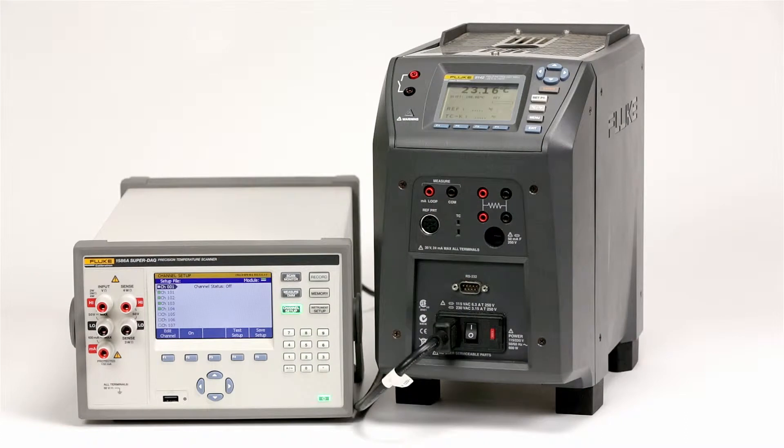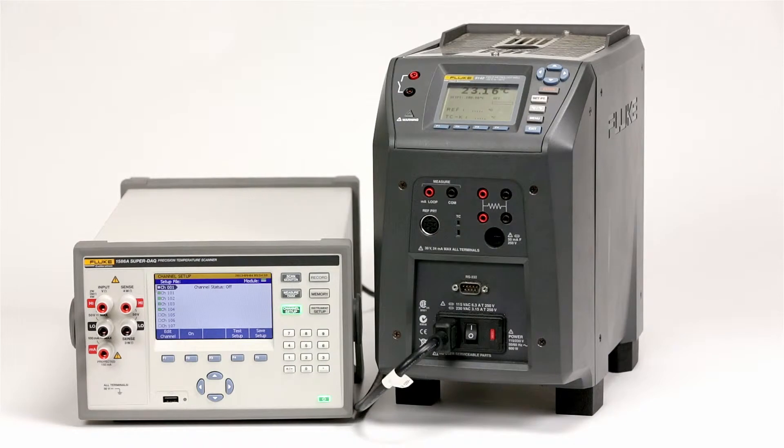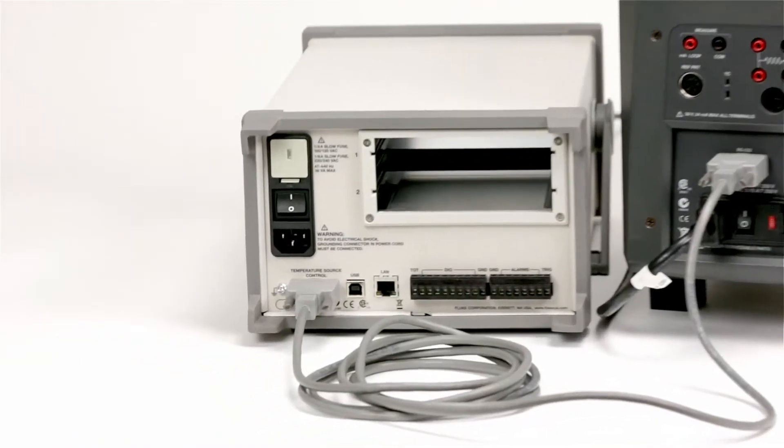The 1586 provides a handy feature for automating the calibration of temperature sensors using a dry well. When connected to a Fluke Calibration Dry Well, the 1586 ramps the dry well through a series of user-defined set point temperatures. At each set point, the 1586 automatically records readings for the reference thermometer and one or more sensors under test.